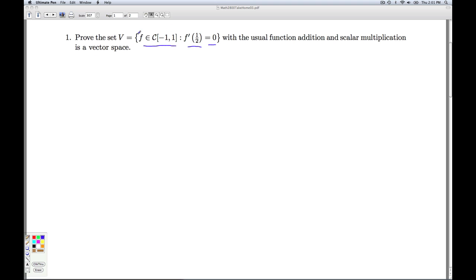So once again, since I'm already talking about functions in C[-1,1] with the usual addition and scalar multiplication, I can take advantage of the subspace criteria we've developed in class and show that this is a subspace, which in turn then means it's a vector space.